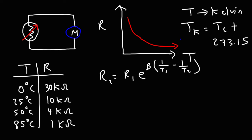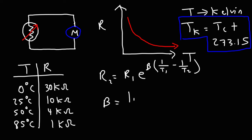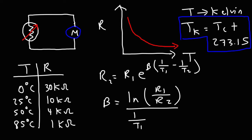To use the formula, you need to calculate the beta constant. To do that, you need two resistances at two different temperatures. Beta = ln(R1/R2) ÷ (1/T1 − 1/T2). We'll work through an example problem showing how to apply these two formulas to NTC thermistors.